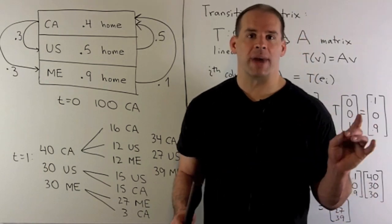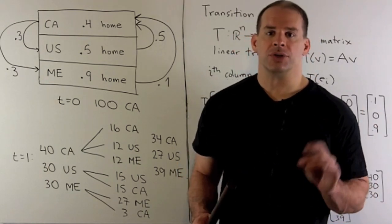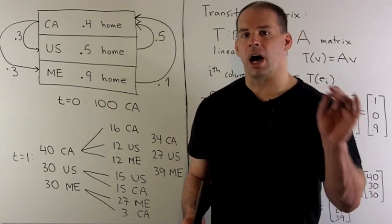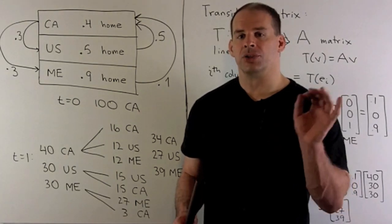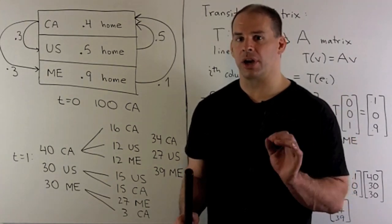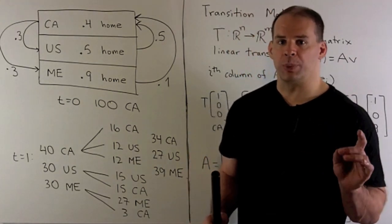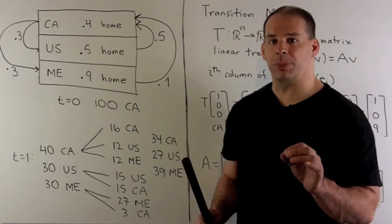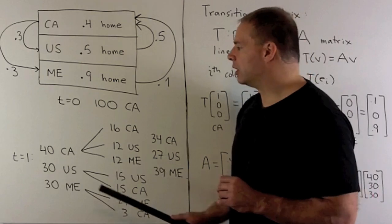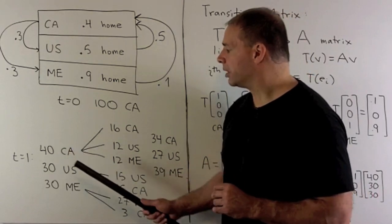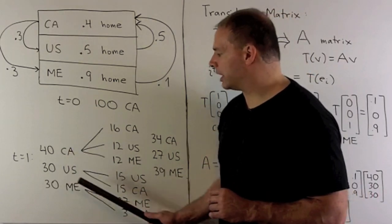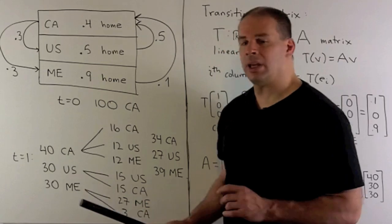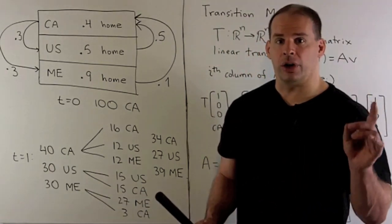Let's run some actual numbers through that. If we suppose we're just starting off with 100 birds in Canada, none in the US, none in Mexico. One year goes by. We have to split this up into 40%, 30%, and 30%, which gives 40 birds in Canada, 30 in the US, 30 in Mexico.